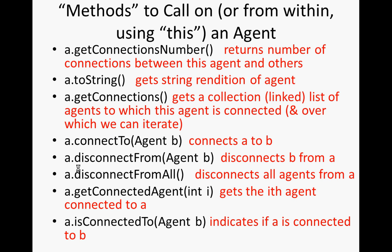Get connected agents — we used this today. We asked this person, get my connected agent number zero. That will return a reference to another agent. By contrast, connect-to and disconnect-from actually do something — they perform a task. You could say, hey, I want to connect to Sam now, or, Bob, disconnect from Sam.